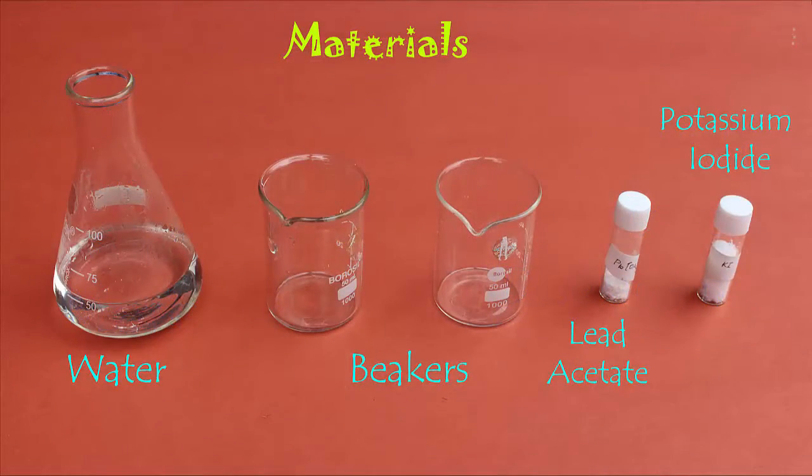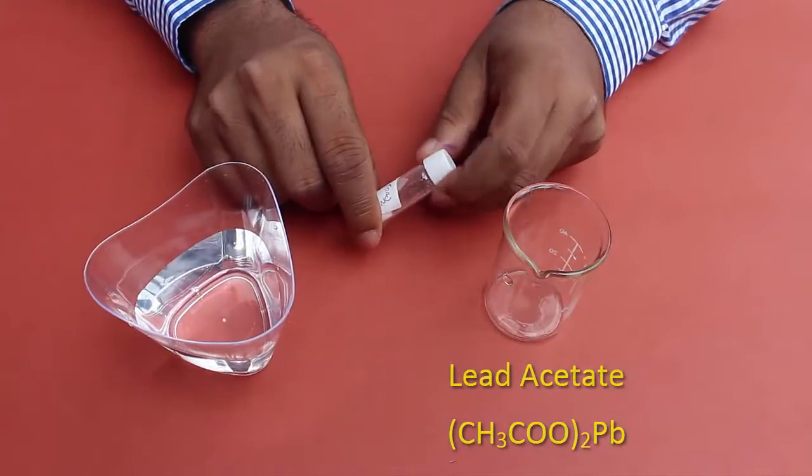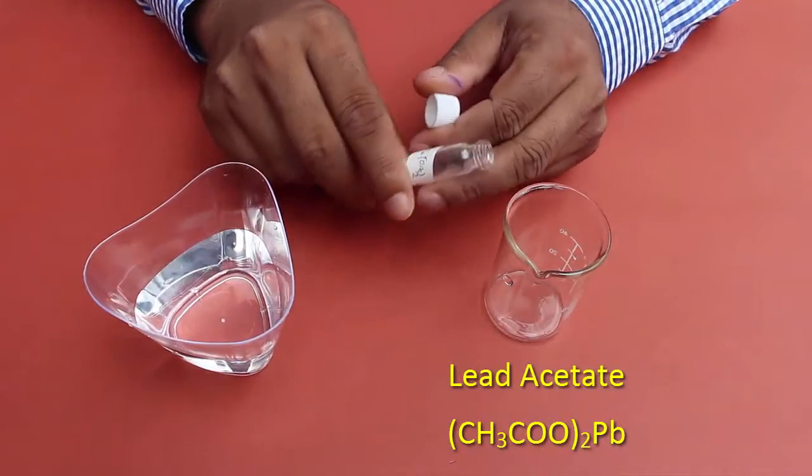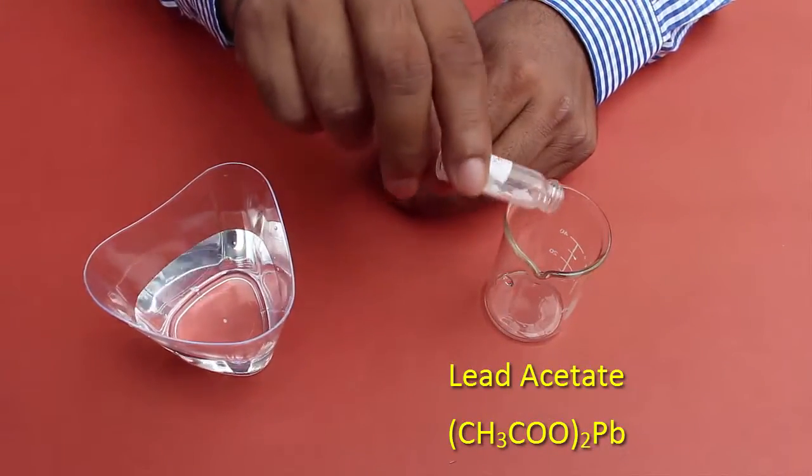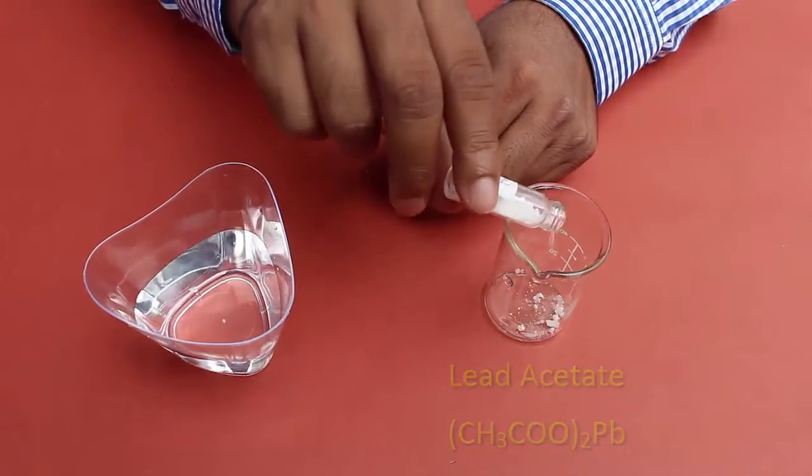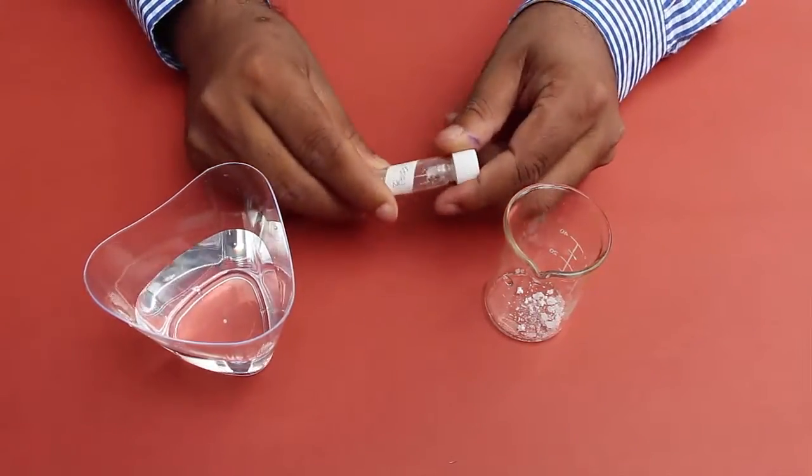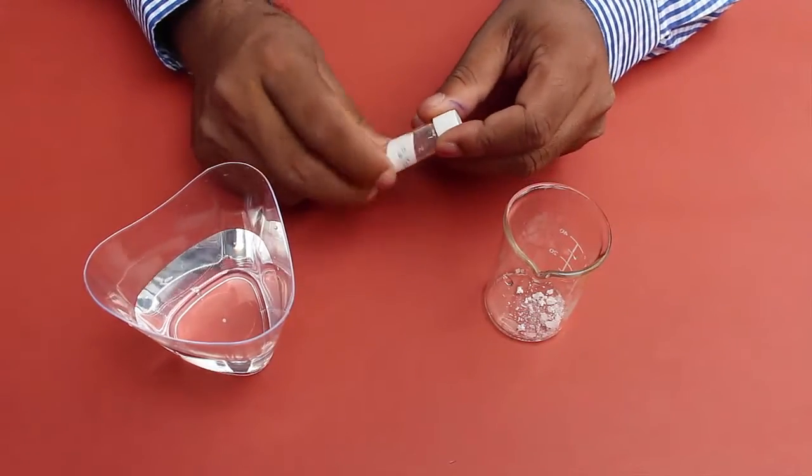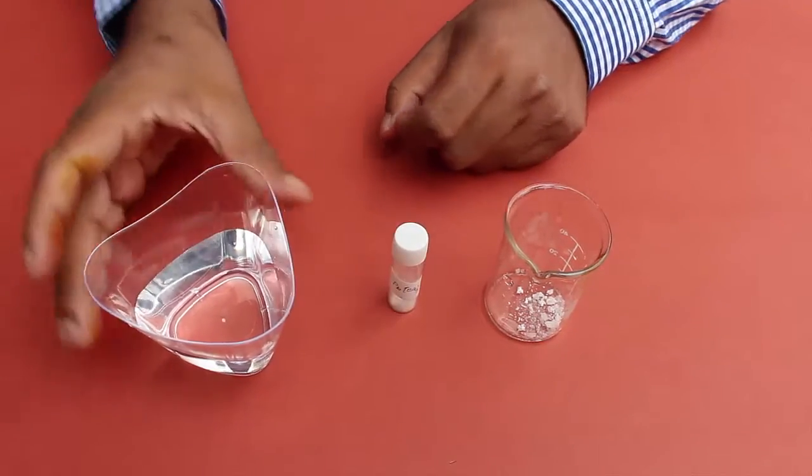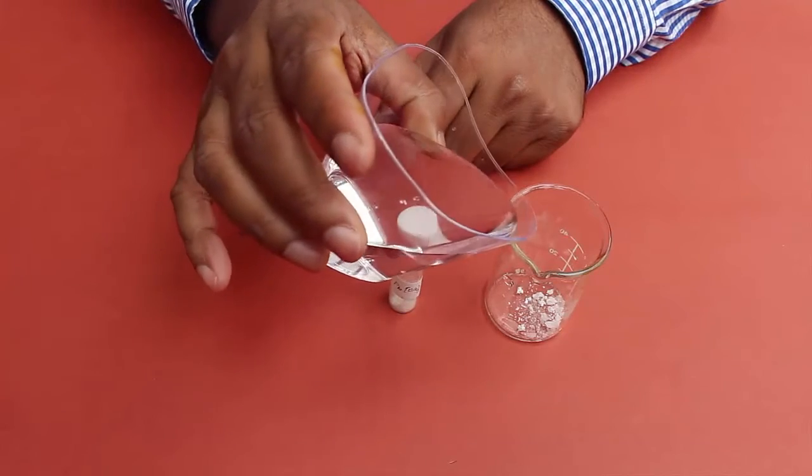Now we are going to prepare the solution of lead acetate. For this we are taking the crystals into an empty beaker, then let us pour some water to the beaker.